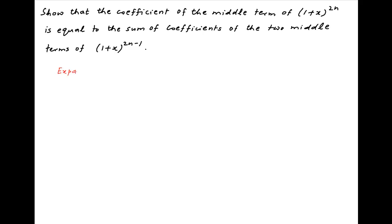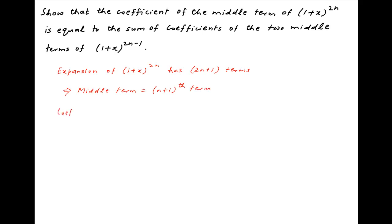Note that the expansion of (1+x)^(2n) has 2n+1 terms. Therefore, the middle term of the expansion is the (n+1)th term. Therefore, the coefficient of the middle term is equal to the coefficient of the (n+1)th term, which is equal to C(2n, n), which can be written as (2n)! divided by n! times n!. Let's call this Result 1.